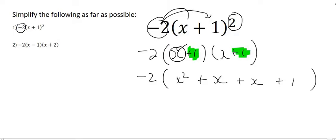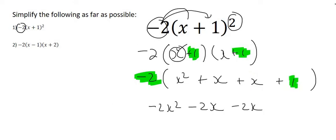Now all that we do is we take this minus 2 and we multiply it into this bracket. So it has to go to every single term in that bracket. So we'll start by multiplying minus 2 with x squared. Well that's just going to give us minus 2x squared. Then we're going to multiply minus 2 and x and that's just going to give us minus 2x. There's another minus 2 times by x which is going to be minus 2x again. And then minus 2 times by positive 1 is minus 2.